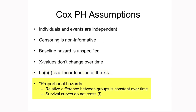The final assumption is the proportional hazards assumption, which is probably the assumption we are most concerned about. This means that the hazard ratio is the same regardless of whether you're looking at time 1, 2, 3, 4, etc. It doesn't mean the hazard stays the same — the hazard can vary — but the relative difference between the groups being compared is constant over time. Therefore, the curves are not going to cross because the hazard ratio stays the same.